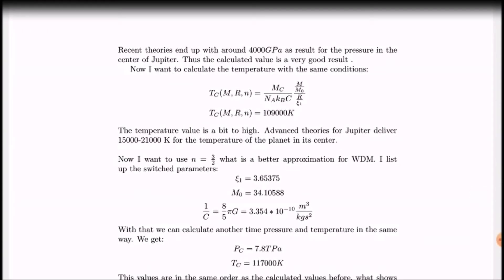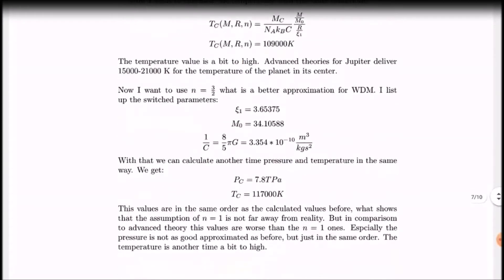I looked then for n equals 3½. That's a better warm dense matter approximation, but not so easy mathematics. And some parameters changed. And I determined Pc and Tc, what is really like the same as I determined before. So I could show that n equals 1 and n equals 3½ is no big difference.